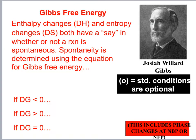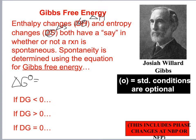We're getting close to finishing the year's content. This is what I kept alluding to before we left: Gibbs free energy. Both delta H and delta S have a say in whether a reaction is spontaneous. Spontaneity is determined by the Gibbs free energy equation: delta G naught equals delta H naught minus T times delta S naught.